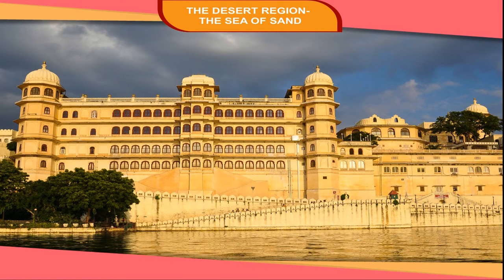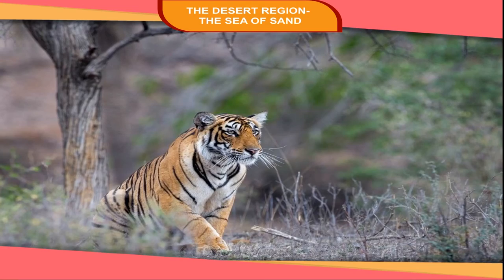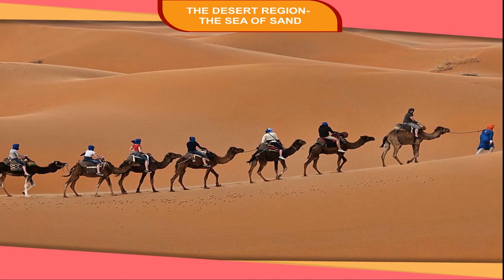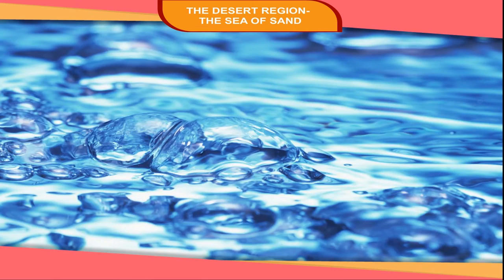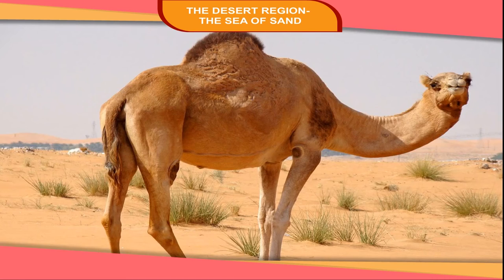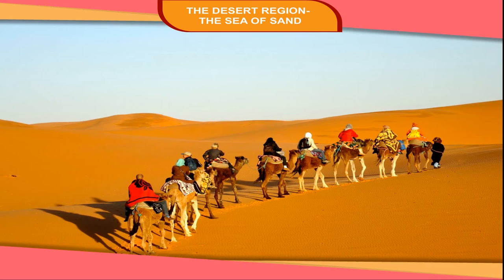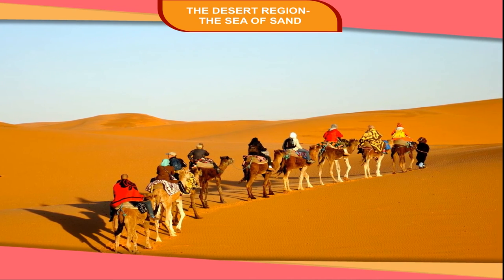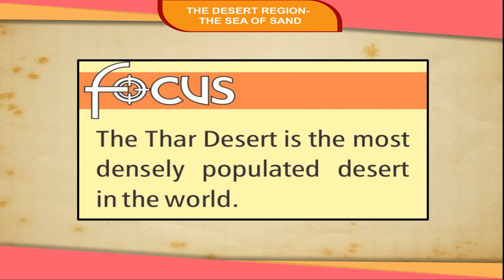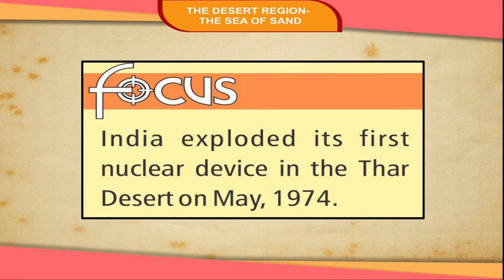Jodhpur and Udaipur are other famous places of historical importance. The Ranthambore National Park near Sawai Madhopur is famous for tigers. Transportation is difficult in the desert region, so people travel on camels. Camels can survive without water and food for many days and are called the ships of the desert. Sometimes people travel on camels in a group across the desert — such a group is called a caravan. The Thar Desert is the most densely populated desert in the world, and India exploded its first nuclear device in the Thar Desert in May 1974.